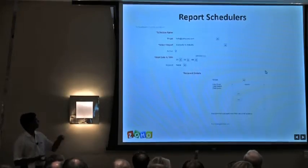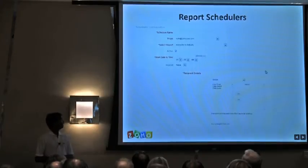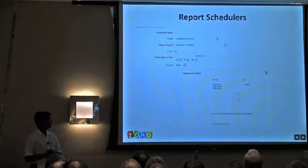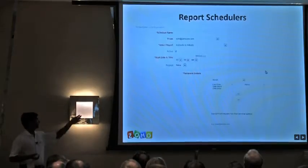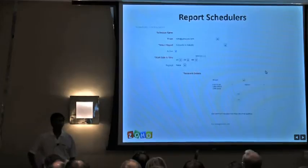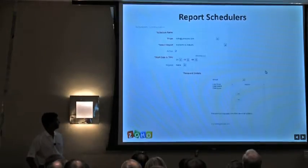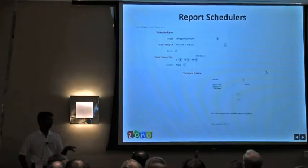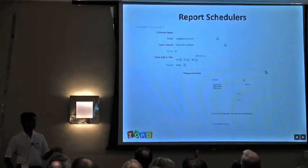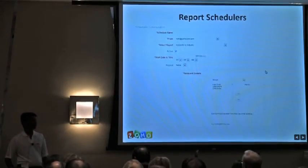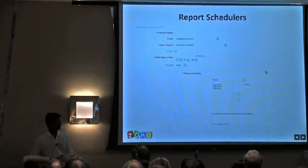To set up a report scheduler, you specify a scheduler name, select which report to schedule, set the start date and time, and choose the recurrence — weekly, monthly, or yearly. The system generates the report and attaches it as an Excel file to an email sent to the specified recipients. Recipients can be administrators, managers selected by role, or specific users. You can also specify email addresses for non-CRM users who only need to receive the reports.